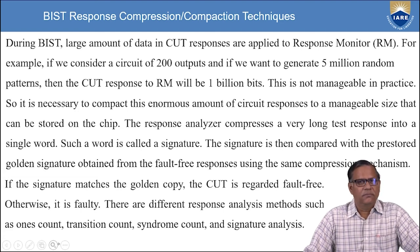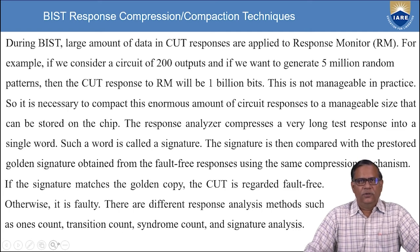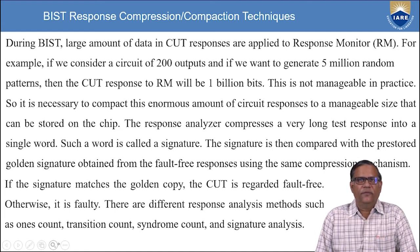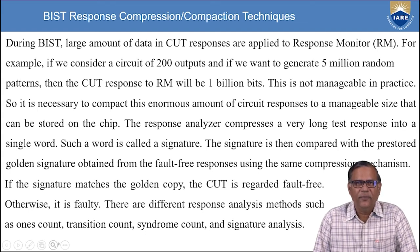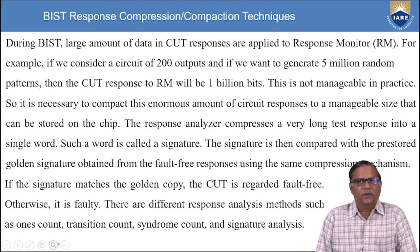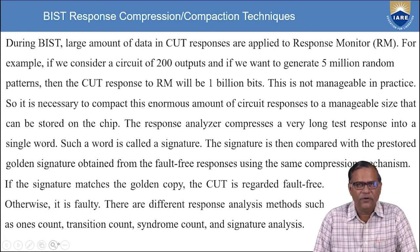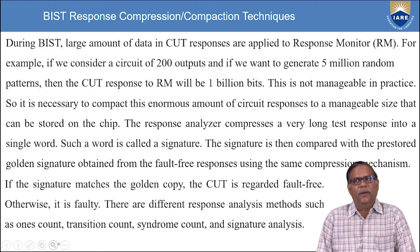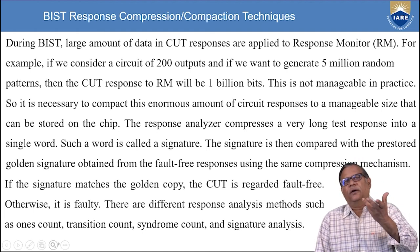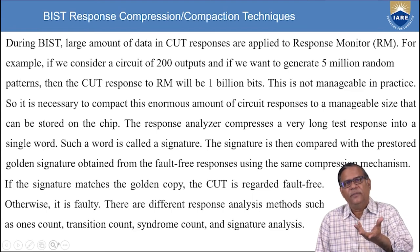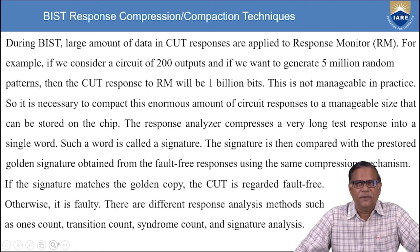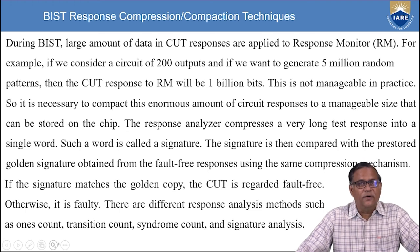A large amount of data in the CUT responses is offered to the response monitor. For example, consider a circuit with 200 outputs generating 5 million random patterns — the CUT response data would be 1 billion bits, which is not manageable. So it is necessary to compact this large amount of circuit responses into a manageable size, such as a minimum of 64 bits or 32 bits. The response analysis compresses very long test responses to a single word — that word is called the signature.